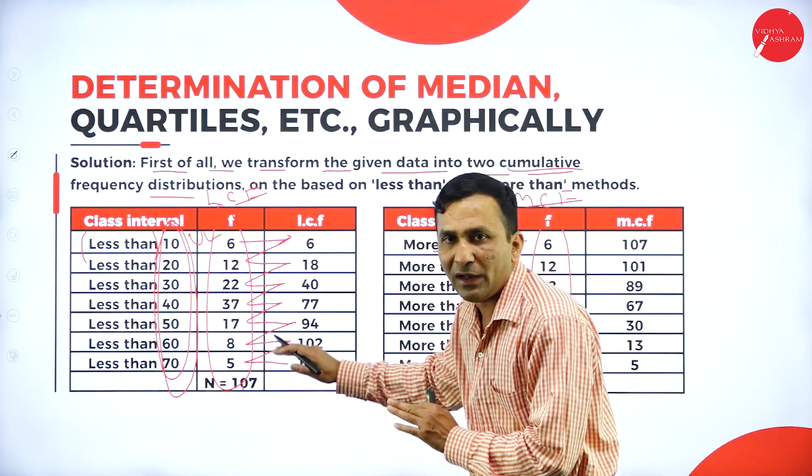Now we are trying to do for quartile 3. The formula is 3 into N divided by 4. If you simplify: 3 into 100 = 300, divided by 4 = 75. So from the y-axis, cumulative frequency 75 — draw the perpendicular line till it touches the less-than cumulative frequency curve. That intersecting point goes down to the x-axis. The value you are getting is 29.5. It is very simple to locate the value with the help of a graph.